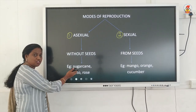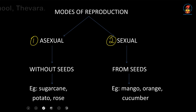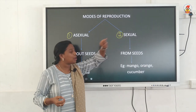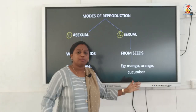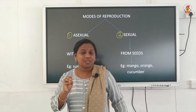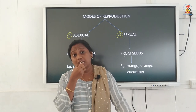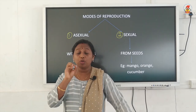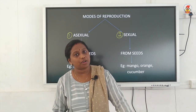You can see asexual reproduction in plants like roses, potatoes, sugarcane, etc. Whereas if a plant is producing a young individual through seeds, you call it sexual reproduction — examples: mango, orange, cucumber, etc. Those plants which are produced from seeds are sexually reproducing plants, and those plants which reproduce without seeds use asexual reproduction.